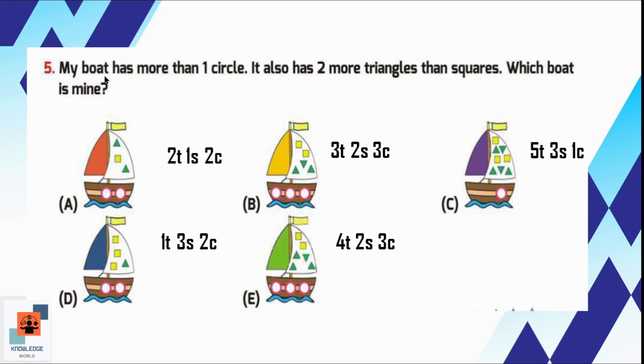According to the given information, the board has more than 1 circle, so we will not consider option C because it has only 1 circle. It has 2 more triangles than squares. We can see in option E, 4 is double of 2. In this option, there are 2 squares and triangles are double the number of squares. So option E is the correct option here.